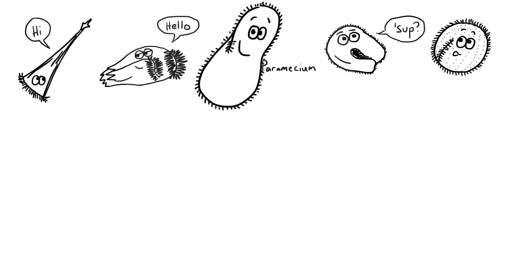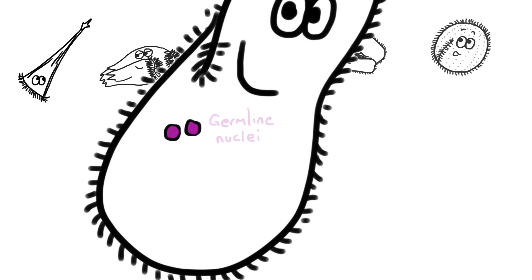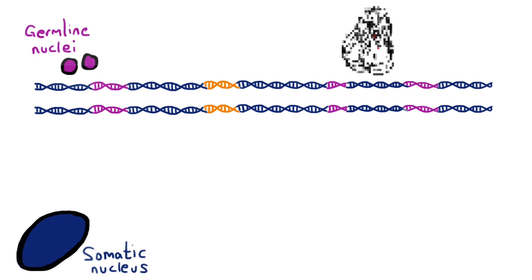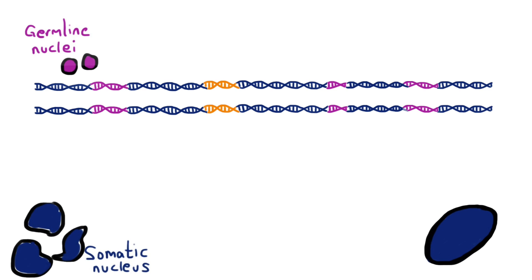Like all ciliates, paramecia separate their germline from their soma by having two nuclei in the same cell. During sexual development, a new somatic nucleus is formed from a germline nucleus, while the old one is degraded.